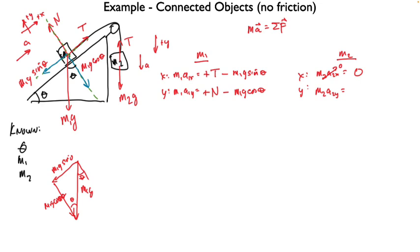In the y direction for mass number 2, there's two forces: tension and M2G. The tension is negative because we called pointing down positive. Free yourselves of the burden that y up is always positive. It's not. Always come here and check these directions. Really check them.